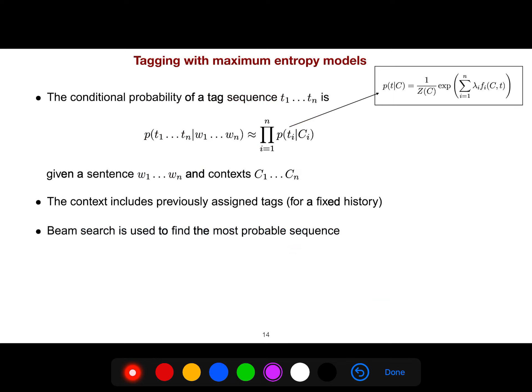So tagging with maximum entropy models. As I said, they are independent. So tag condition on one of those contexts. Because it's sequence of contexts and sequence of tags. Then, because each word has a context, next word has a context, next center word has a context. And it has its own tags. So the context includes previously assigned tags. And beam search is used to find the most probable sequence.